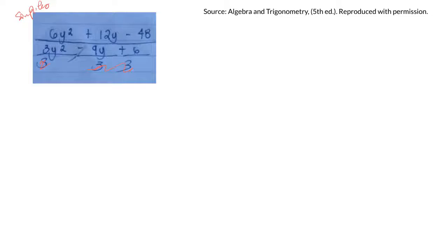On the top, I can factor out a 6 from each of those terms. You always want to factor out a common factor first and as much as you can. So it'll be 6 times y squared plus 2y minus 8.